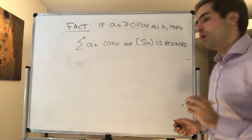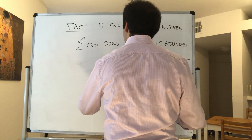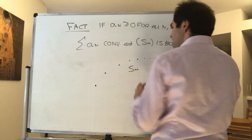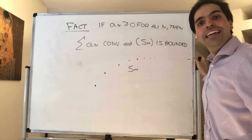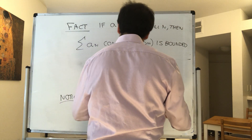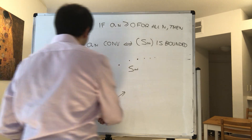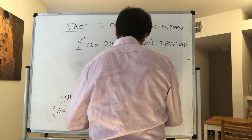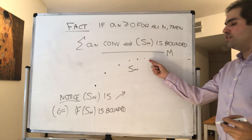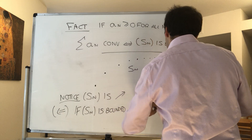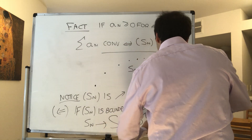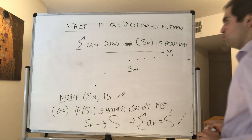Here's the proof. If S_N is bounded, well, we have an increasing sequence that is bounded. So by the monotone sequence theorem it must converge. By MST, S_N must converge to some capital S, which means by definition that the series must converge to S. So the series converges.